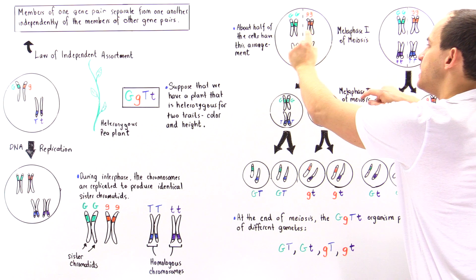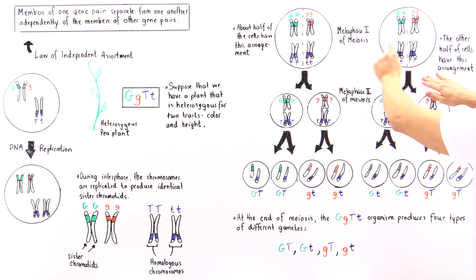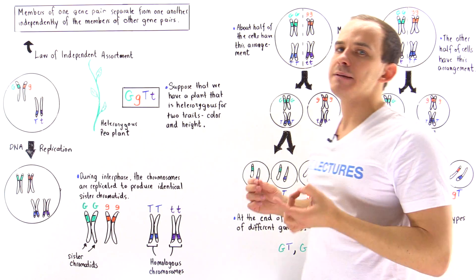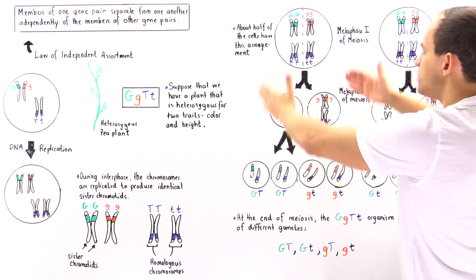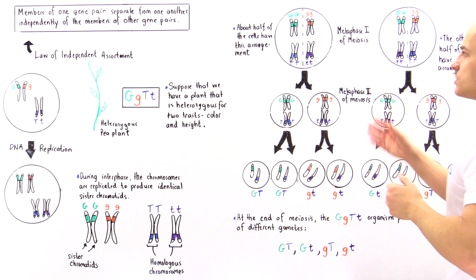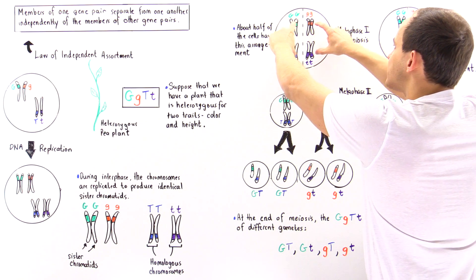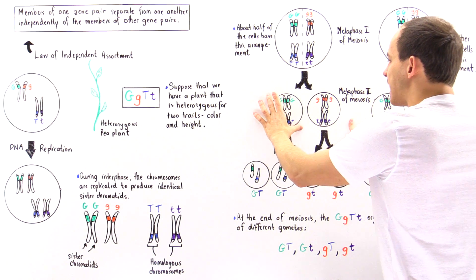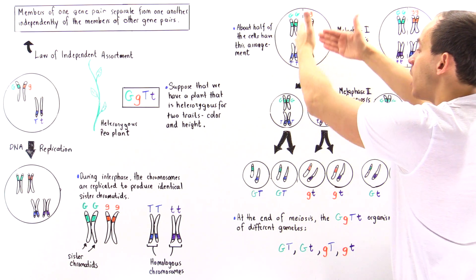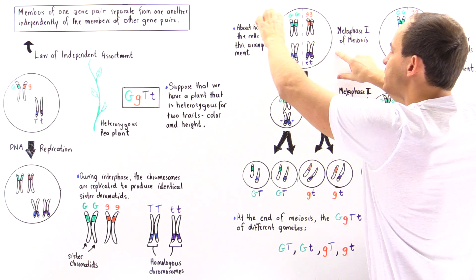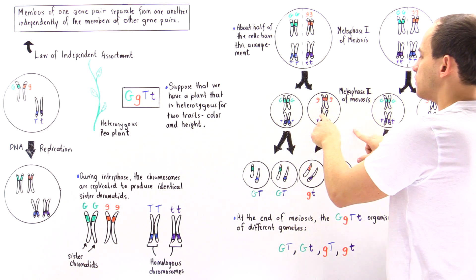These two different arrangements will produce different types of gametes. Let's carry out meiosis for the first arrangement. If at metaphase I we have this arrangement, these chromosomes separate to opposite poles, cytokinesis takes place, and we form two cells. Cell one and cell two — this is where reduction of chromosome number takes place, going from 2N to haploid 1N. The G pair goes to one cell and the T/t pair goes to the other.